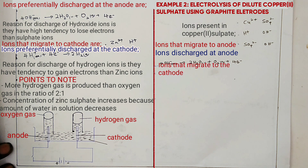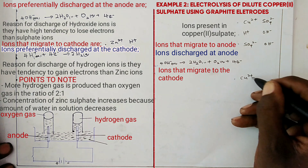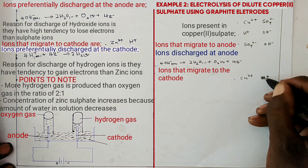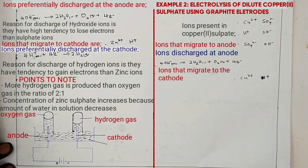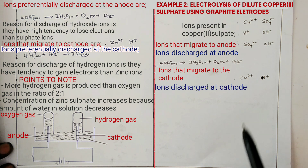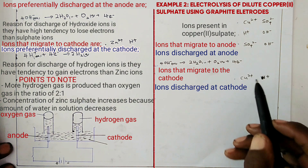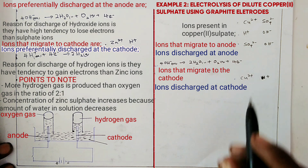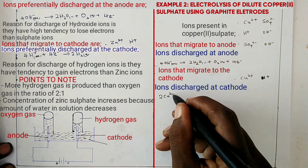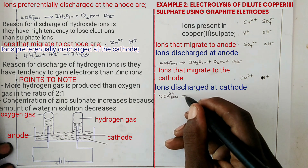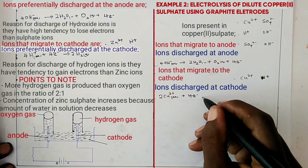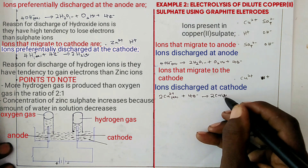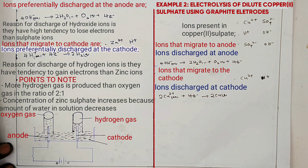The ions that migrate to the cathode are copper ions and hydrogen ions. The ions discharged at the cathode are copper ions. Since 4 electrons are lost at the anode, 4 electrons must be gained at the cathode: one copper ion gains 2 electrons, so 2 copper ions are needed — 2Cu²⁺(aq) + 4e⁻ → 2Cu(s). The reason copper ions are preferentially discharged over hydrogen ions is because they have a higher tendency to gain electrons than hydrogen ions.